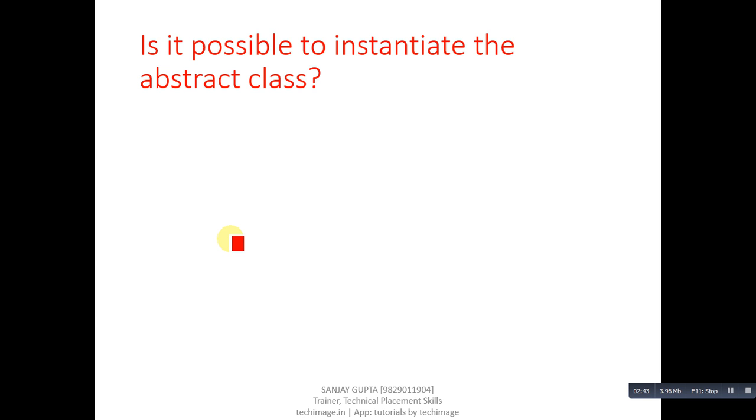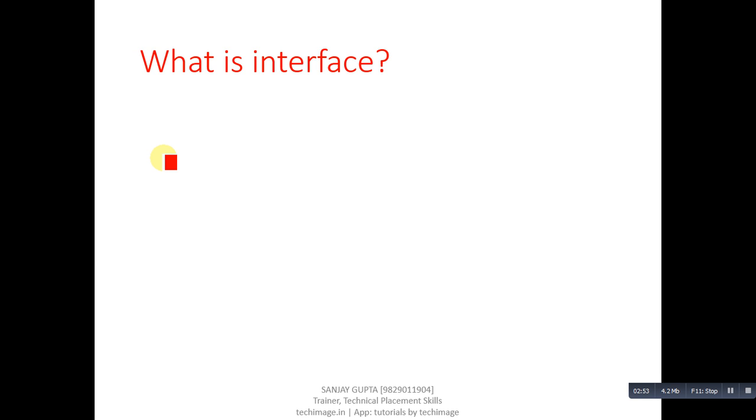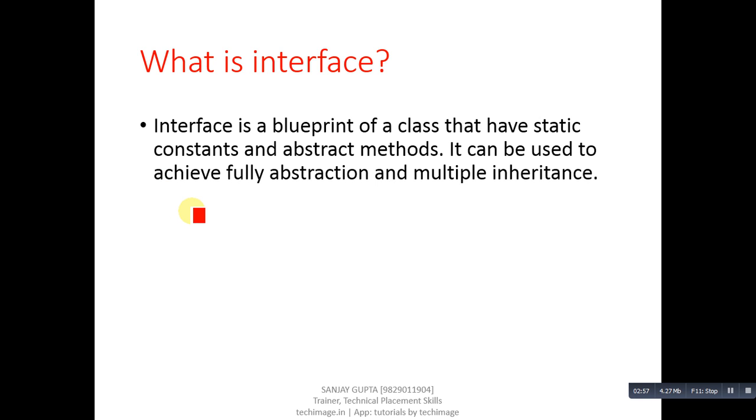Next question, is it possible to instantiate the abstract class? Answer is no. Abstract class can never be instantiated. Next question, what is interface? Answer is interface is a blueprint of a class that have static constants and abstract methods. It can be used to achieve fully abstraction and multiple inheritance.